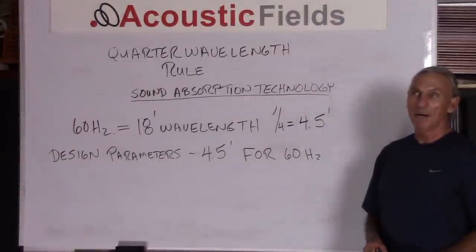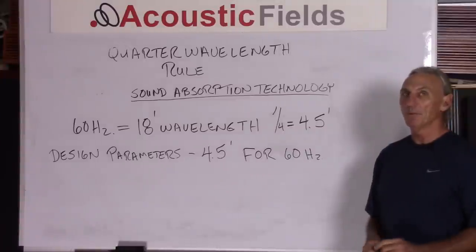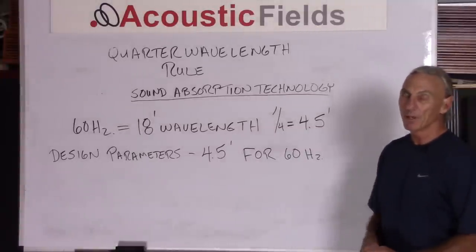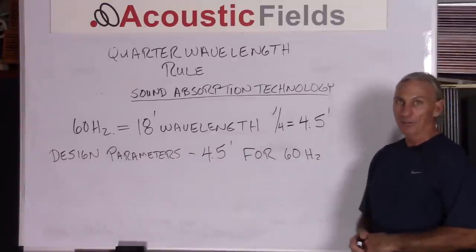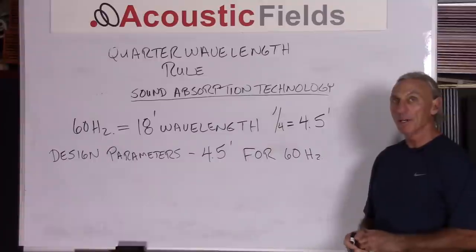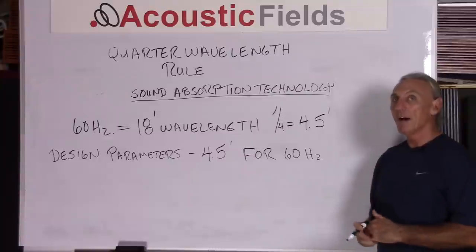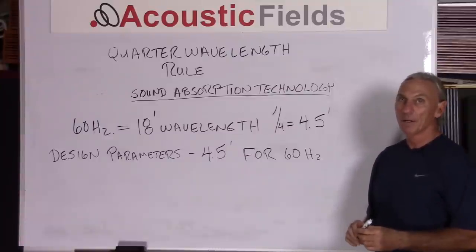Alright, we calculated how to determine quarter wavelength and then we looked at its impact in room acoustics producing modal pressure issues. Now let's look at sound absorption technology. What design parameters do we need in our sound absorbing technology knowing that this 25% of wavelength is really critical, its position within the room?